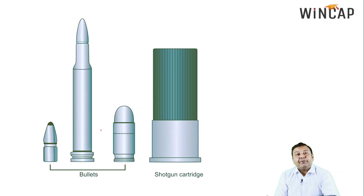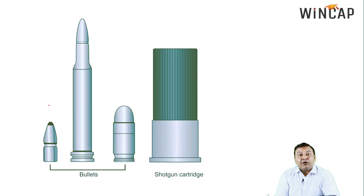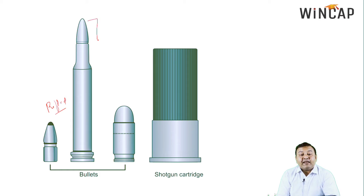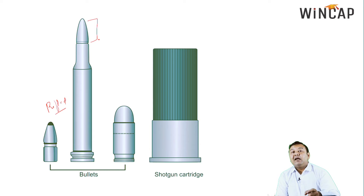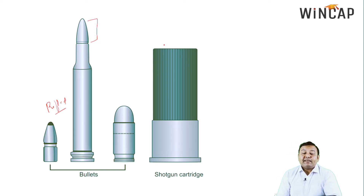Here is a comparative picture showing both types of cartridges. The one on the right is your rifled gun cartridge. A rifled cartridge is basically a single metallic body with a bullet at the extreme top end. This bullet is the projectile which is going to leave the firearm and enter into the target.